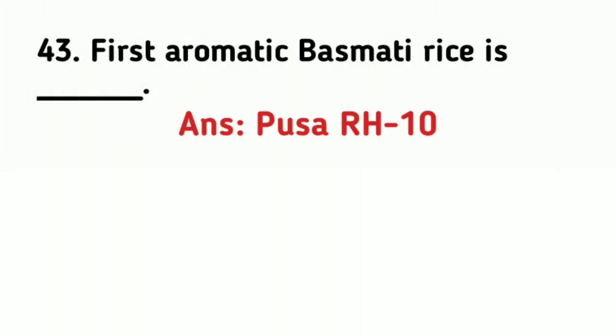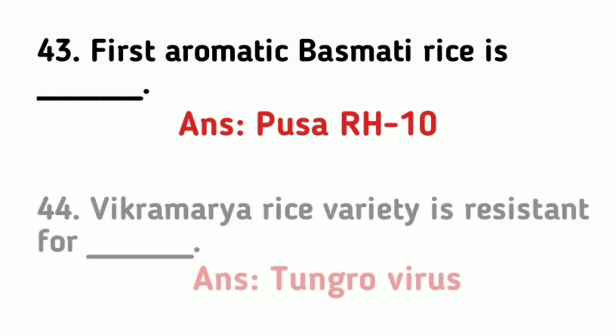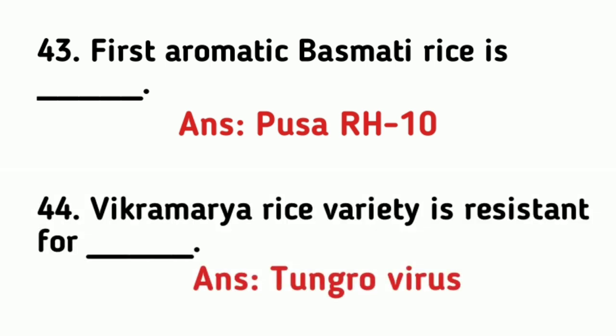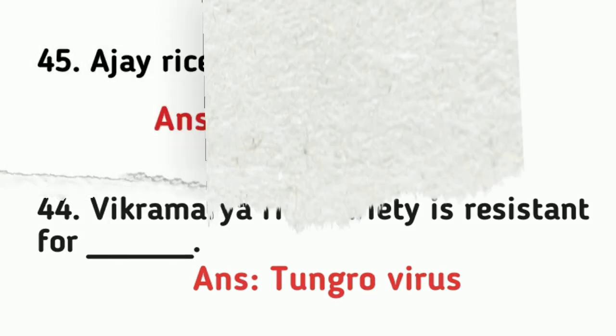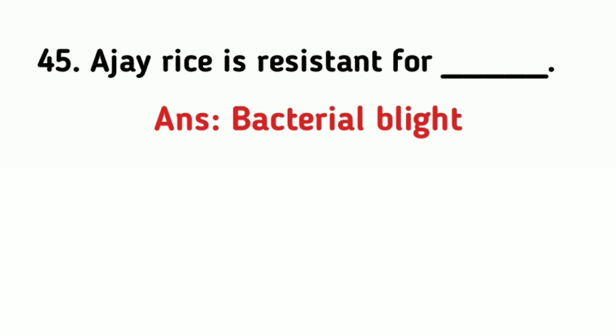The first aromatic Basmati rice is Pusa RH10. Vikramarya rice variety is resistant to tungro virus. Ajay rice variety is resistant to bacterial blight.